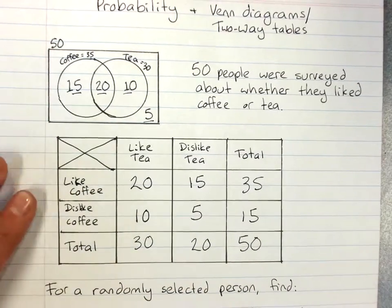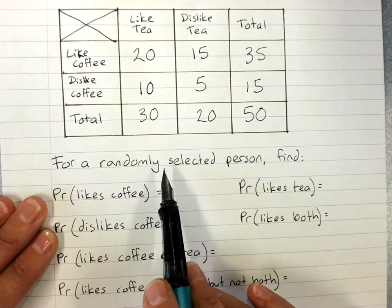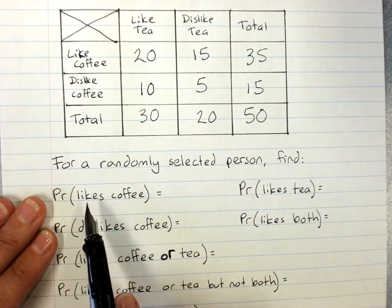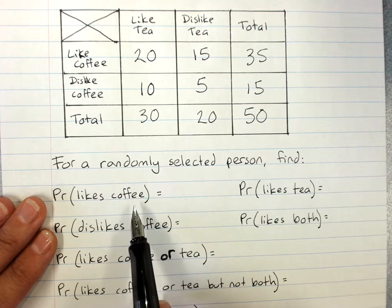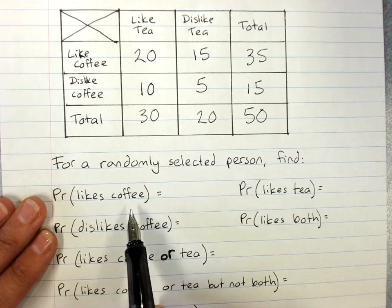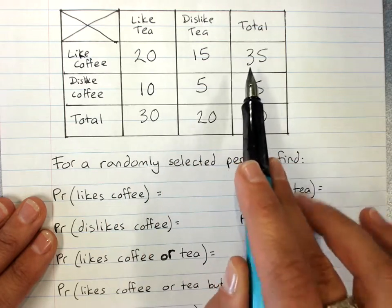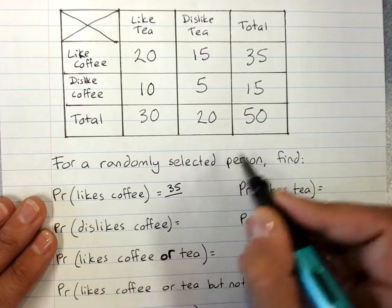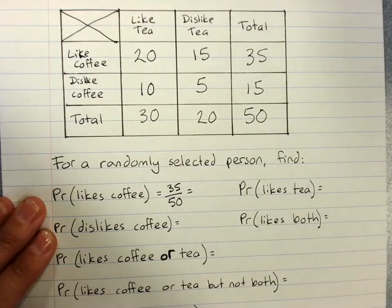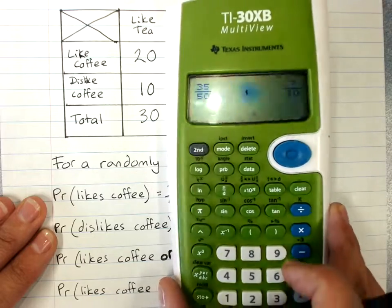So now we can use this to answer some probability questions. So a person is selected at random. Find the probability that this person likes coffee. We need the total number of people who like coffee. It's everybody who likes coffee: 35 out of everybody in the group, 50. Check if we can simplify that. 35 over 50. 7 out of 10.